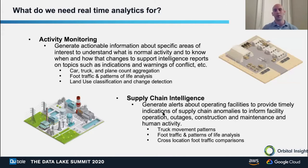Two main use cases for real-time analytics are activity monitoring and supply chain intelligence. Activity monitoring means looking at a particular location and building up a dossier using techniques such as car counting, land use aggregation, or building identification — determining the level of activity there. Government agencies can use this to determine activity levels at foreign bases, classify types of vehicles or planes, and perform pattern of life analysis and change detection.